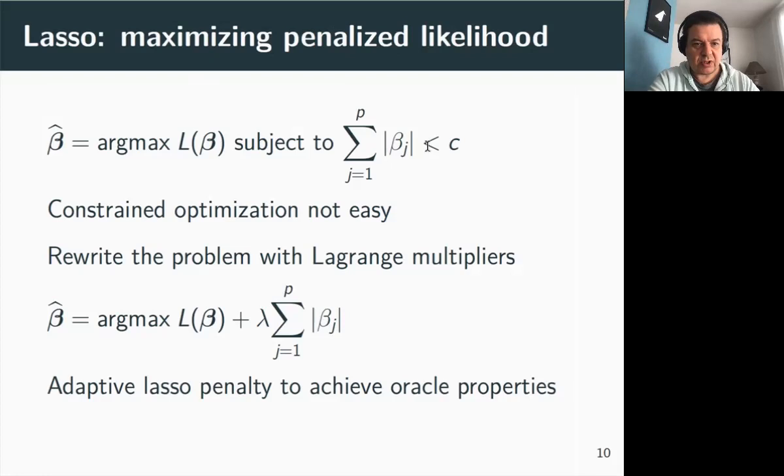A constraint optimization, like the one we've seen for the LASSO or for ridge regression, is not easy to manipulate and to solve. It's often more convenient to rewrite the LASSO problem in the so-called Lagrangian form, which states that for some positive lambda here, the solution of the problem is the maximum of likelihood plus a penalty on the regression parameters.